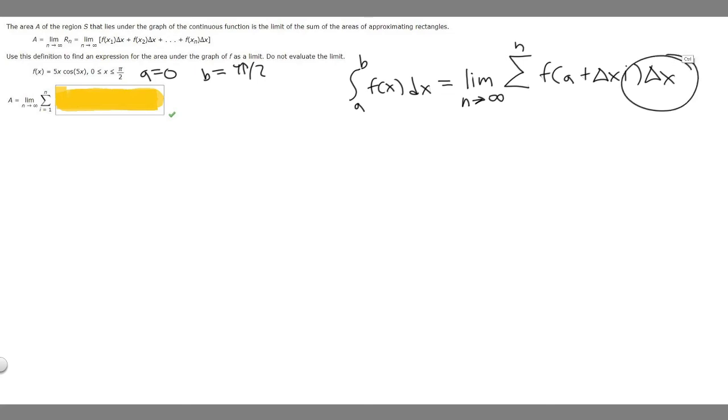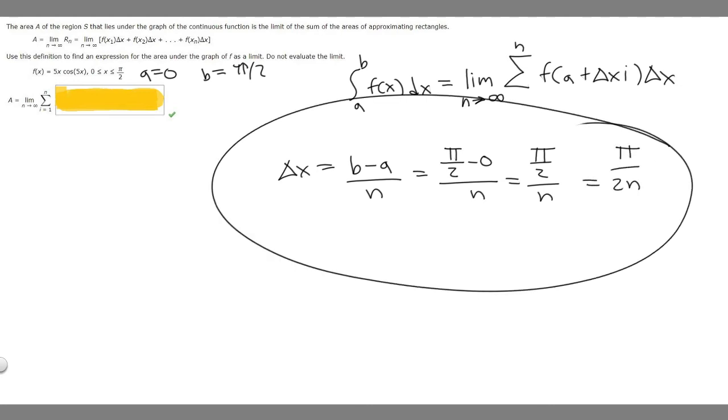First let's find delta x. Delta x is going to equal (B - A)/n. We already know what B is. B is π/2, and A is 0. So if we solve this, we're going to get (π/2 - 0)/n, which equals π/2n. Now we've got delta x, and basically now we have everything we need to solve this.